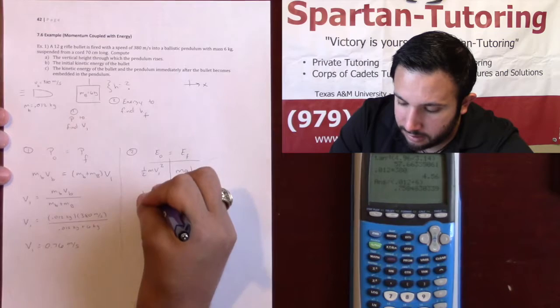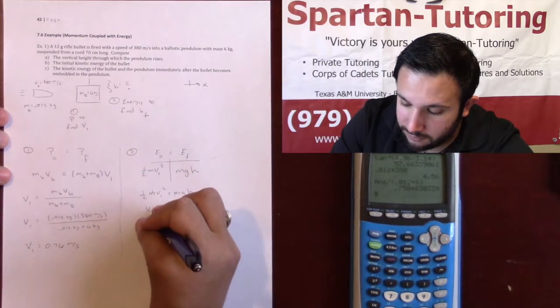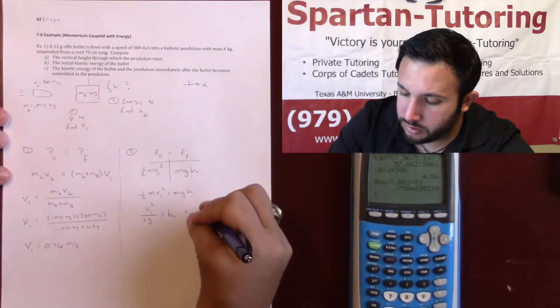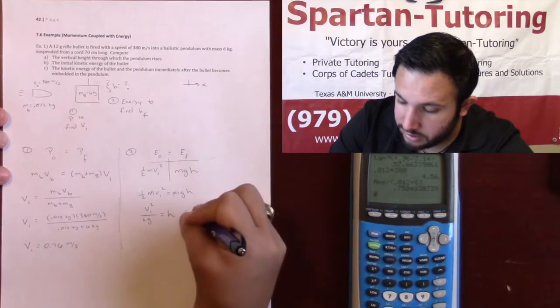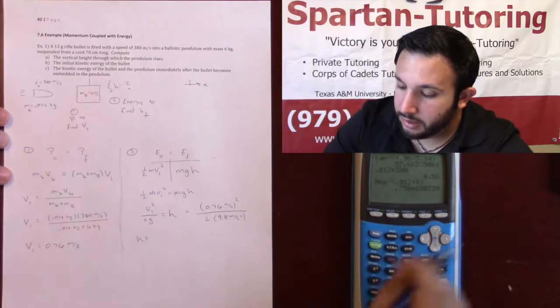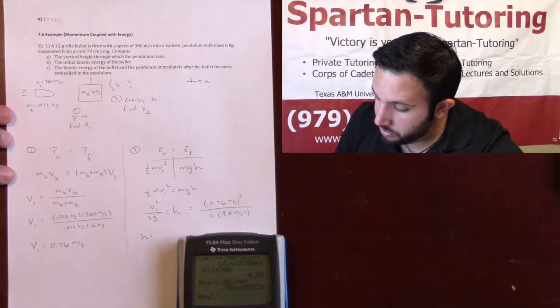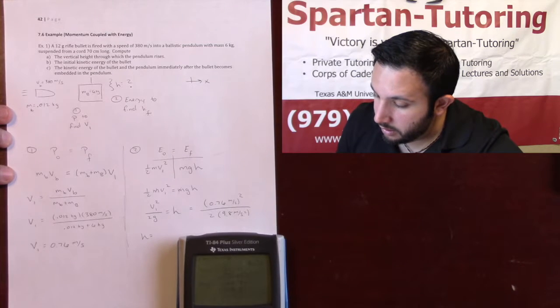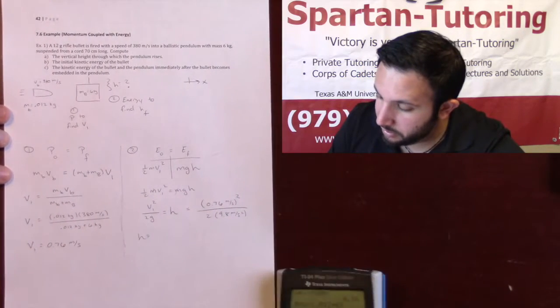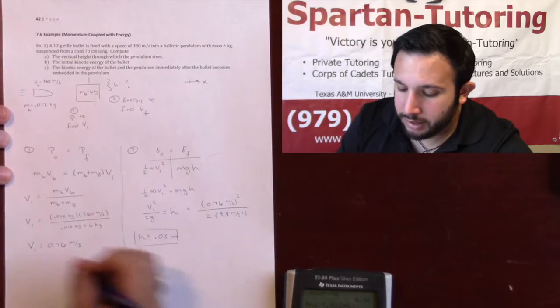And so, if you have one-half mv1 squared equal to mgh. Solving for that h, these m's are going to end up canceling. And you're going to get v1 squared over 2g is equal to my height. Which v1 we found earlier to be 0.76 meters per second. All of that squared. Divided by 2 times g, we're assuming on Earth. So 9.8 meters per second squared. And so what I get is the height. So for part a, let's go ahead and square what we've got. Divided by, we'll go 2 times 9.8. And so we have 0.03. This is going to be 0.03 meters. So that's how high this block is going to rise. And that's part a.